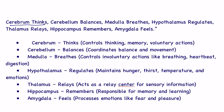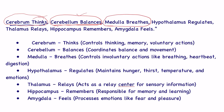Now let's learn a trick: cerebrum thinks, cerebellum balances, medulla breathes. Breathing is an involuntary action, so medulla oblongata controls all involuntary actions. Hypothalamus regulates, so it controls thirst, temperature, and hunger. Thalamus relays all information — it is a relay center.